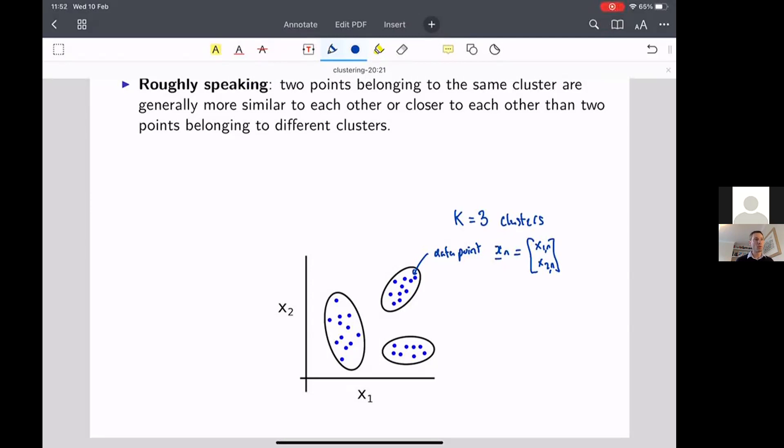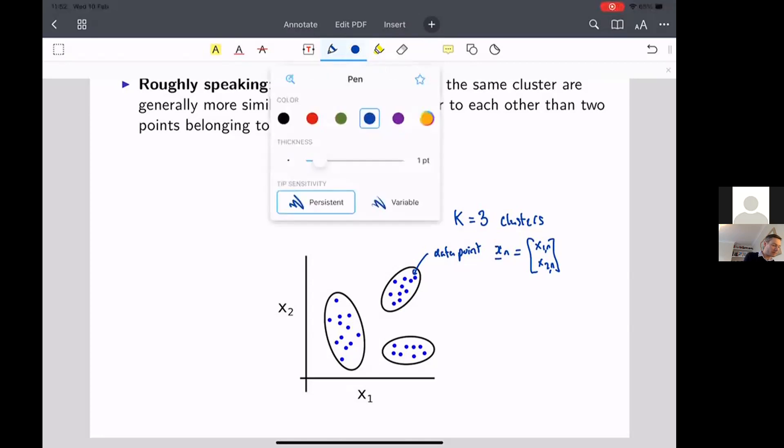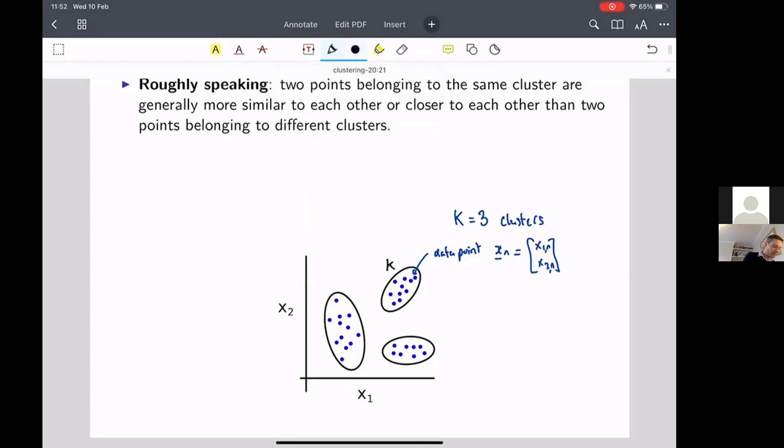all the points inside this black ellipsoid at the top here, all of these guys are going to be assigned to k one, cluster one. These guys down here will be assigned to cluster two, and these ones over here will be assigned to cluster three.